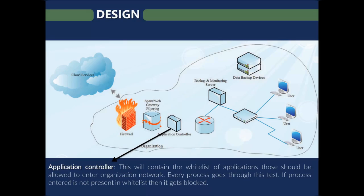The application controller contains a whitelist of applications that should be allowed to enter the organization's network. A whitelist is a list of applications which are granted access. Every process goes through this test, and if any application is not present in the whitelist, it gets blocked.